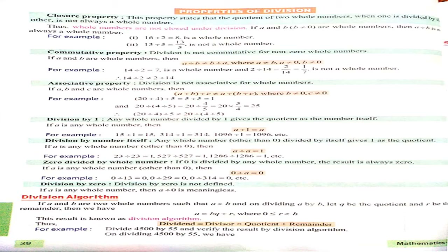Now next, associative property: division is not associative for whole numbers. If A, B and C are whole numbers, then (A ÷ B) ÷ C is not equal to A ÷ (B ÷ C). See the example: if we divide 20 ÷ 4 first, then divide by 5, the answer is 1. Next, if we divide 4 ÷ 5 first, then divide by 20, the answer is 25. So in both conditions our answers are not the same.